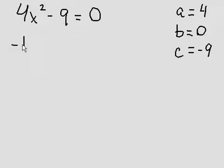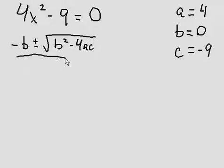So let's get started. Negative b plus or minus the square root of b squared minus 4ac, all over 2a.